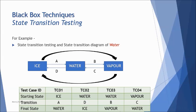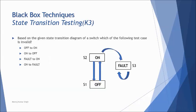Let's quickly take a sample example here to understand what we are talking about and how the question can typically appear. Here we have a sample question: based on the given state transition diagram of a switch, that is electrical switch, which of the following test case is invalid? Whether that is off to on, on to off, fault to on, or on to fault.